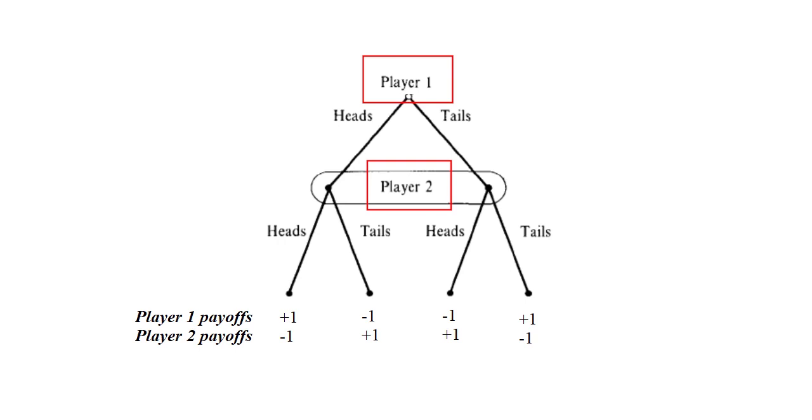Now we can write their payoffs. So if it is heads-heads, then it is +1 for player 1 and -1 for player 2. Tails, -1, +1. Tails and heads, -1, +1, and then tails-tails, it is +1 and -1. So we can represent a game using the game matrix or we can represent a game using a decision tree.